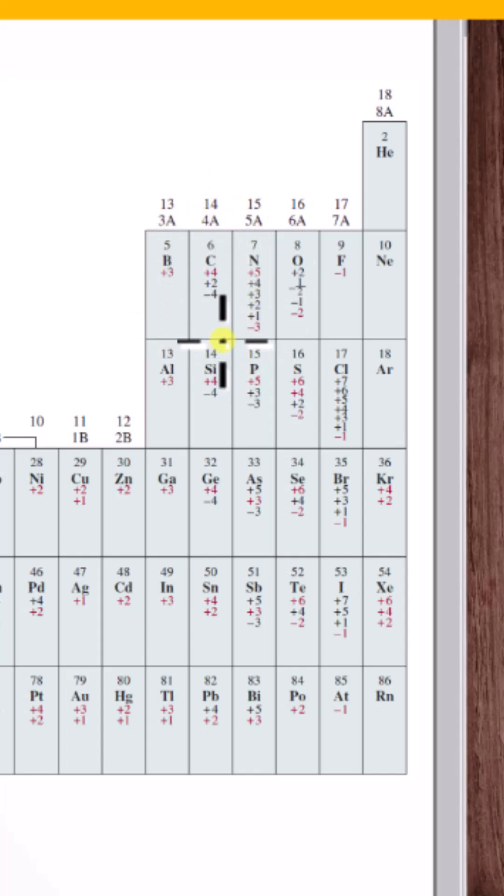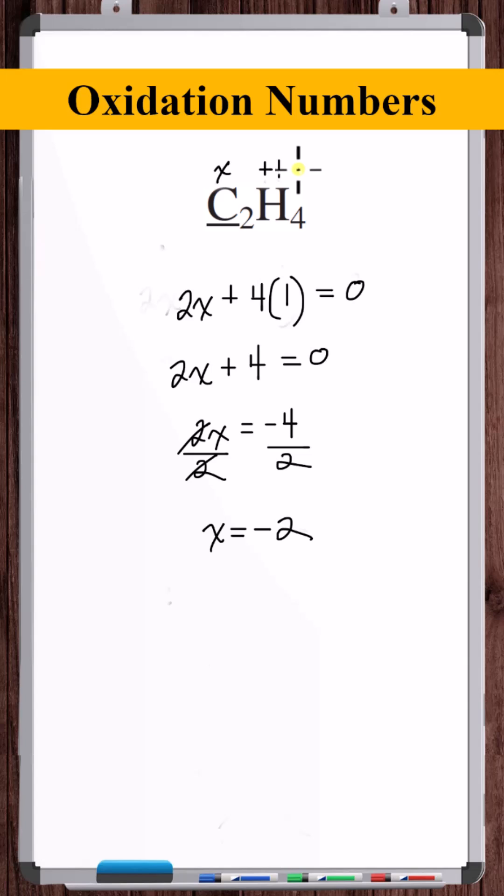However, remember this chart is just a guide. In other situations, because hydrogen can only have an oxidation number of plus 1 or minus 1, we could solve for x when the hydrogen oxidation number equals minus 1 and compare that to the oxidation number chart.